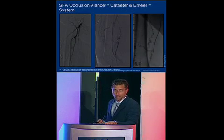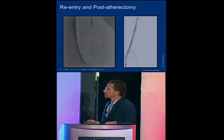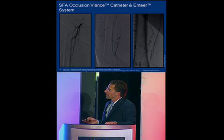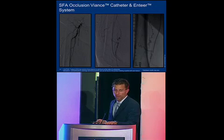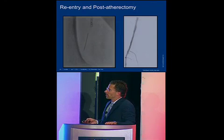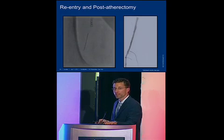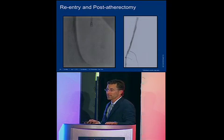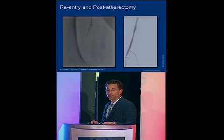A combined Vianz and Intere case: a fairly long SFA occlusion of about 150 mm. After getting the Vianz down, we were subintimal and unable to get back into the true lumen with a wire. We put the Intere balloon down, popped the wire right through into the true lumen, and performed standalone atherectomy. Importantly, the re-entry site was treated with a TurboHawk — shaving away from the wall and shaving out the flap — often without even needing balloon inflation. Since using Intere, we have yet to have to stent a re-entry site, getting stent-like results atraumatically.